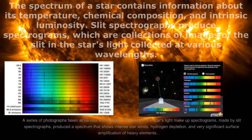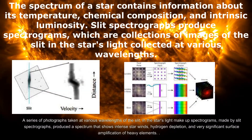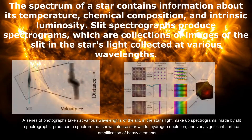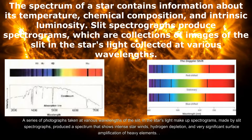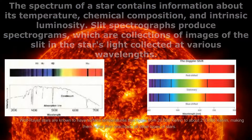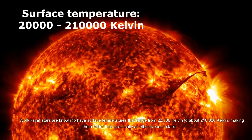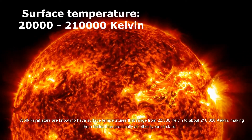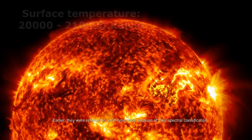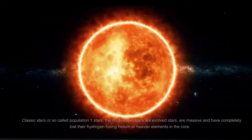A star's spectrum provides information about its temperature, chemical makeup, and inherent luminosity. Spectrograms made by slit spectrographs produce a spectrum that shows intense star winds, hydrogen depletion, and very significant surface amplification of heavy elements. Wolf-Rayet stars are known to have surface temperatures ranging from 20,000 Kelvin to about 210,000 Kelvin, making them hotter than practically all other types of stars. Earlier they were referred to as W-type stars because of their spectral classification.